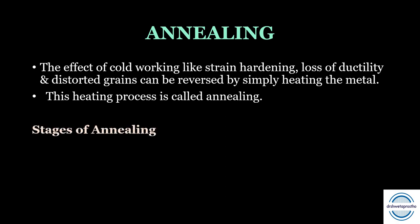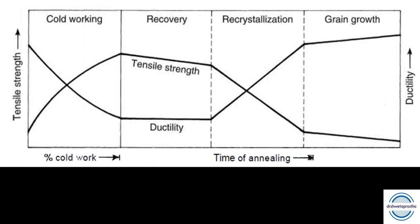Annealing takes place in three stages: first is the recovery stage, second is recrystallization, and third is grain growth. A cold-worked metal contains a lot of residual stresses, and the purpose of annealing is to relieve these stresses. In the first phase — the recovery phase — maximum stress relief occurs. As seen in the picture, there is a slight decrease in tensile strength with no change in ductility. So the most beneficial stage is the recovery stage.